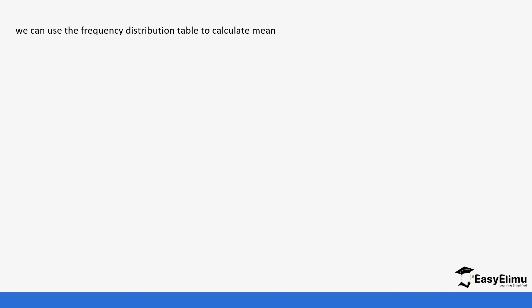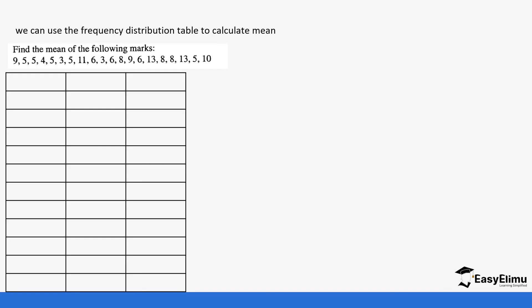Now let's look at another example where we use the frequency distribution table to calculate the mean. The first thing we do is create the frequency distribution table. We have the mark column on one side, then tally as we did in the previous lesson, then the frequency column. We start with the lowest value, which is 3, and 3 appears twice, so its frequency is 2. Then 4 appears only once.